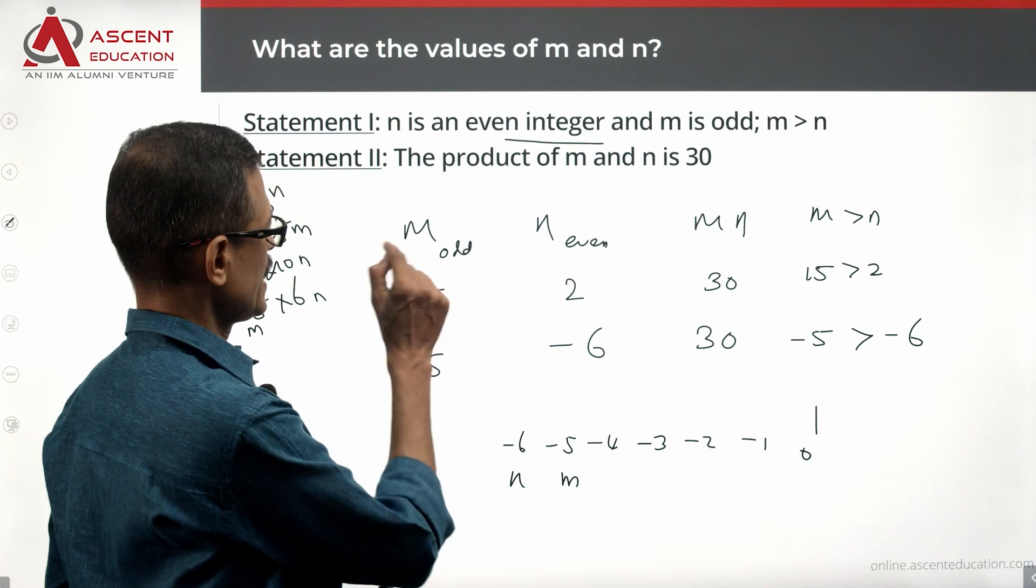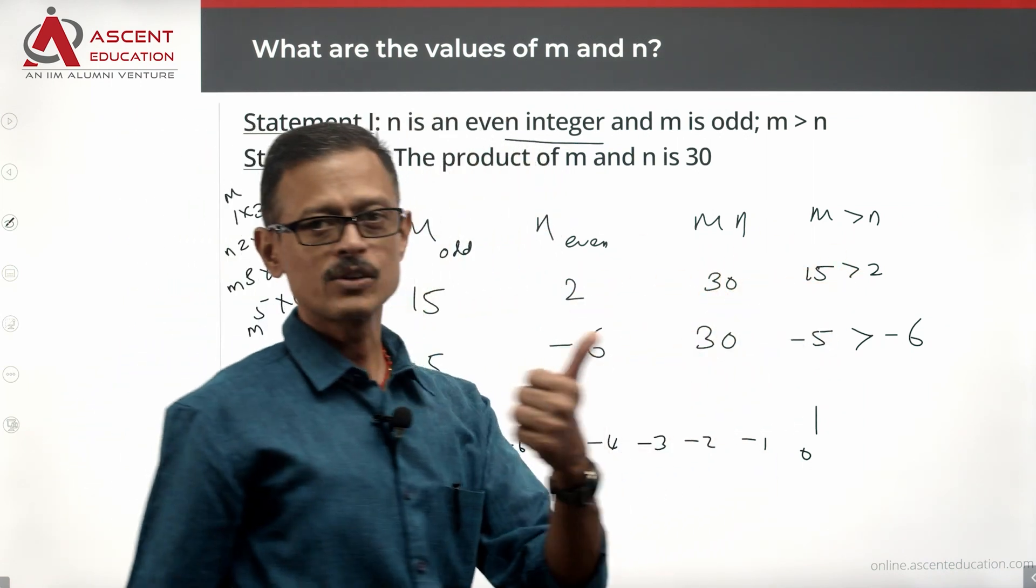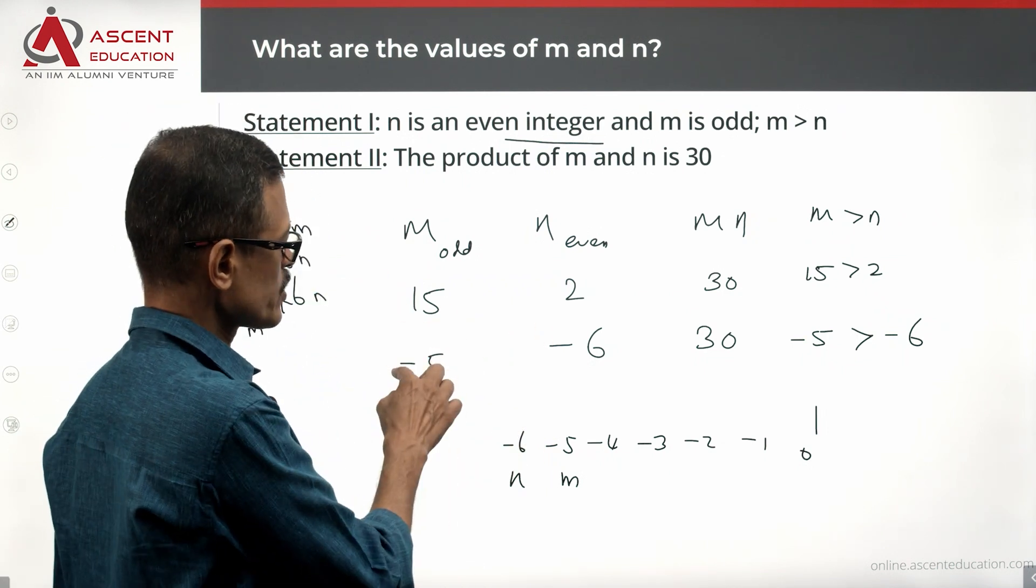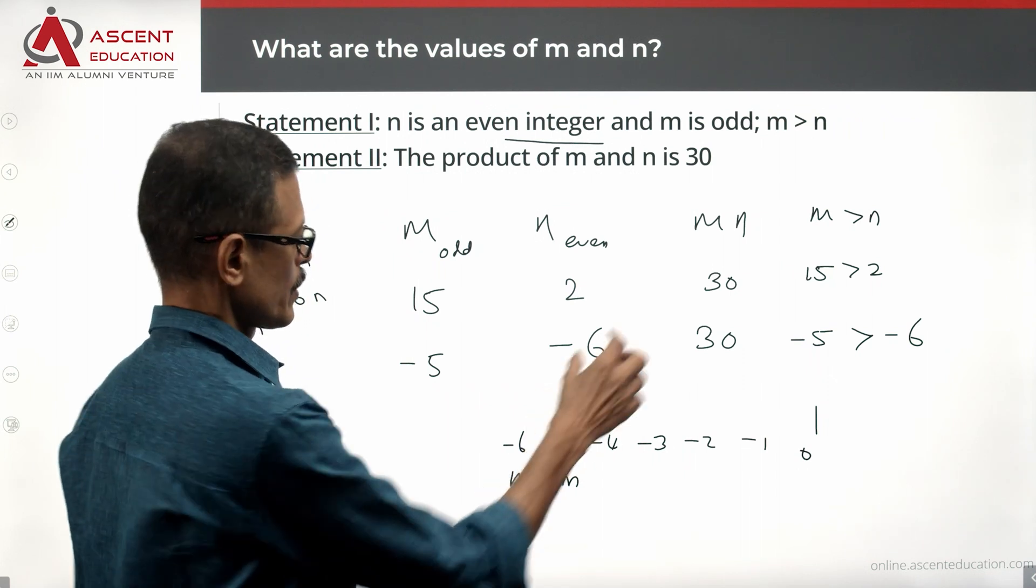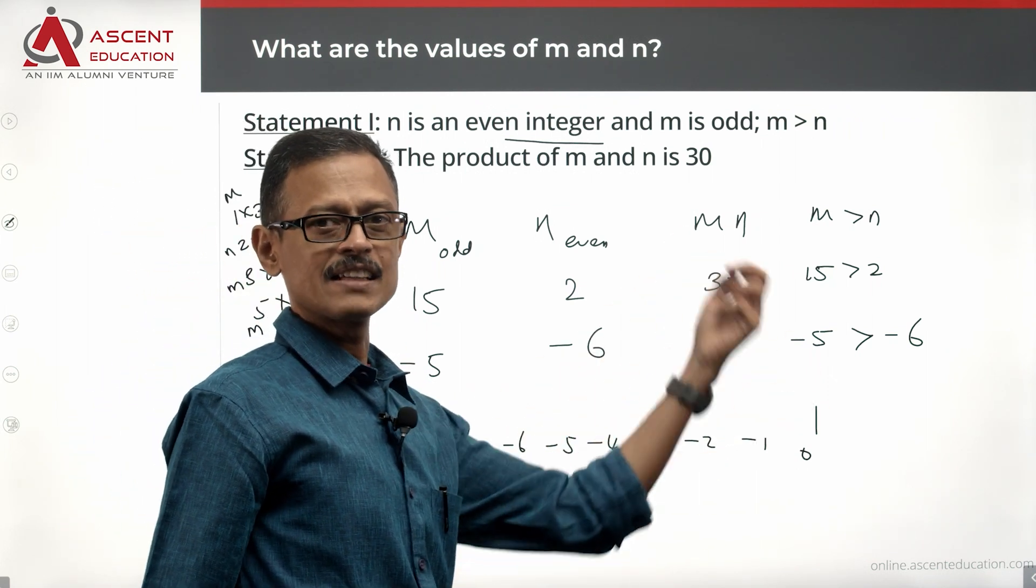What all should it satisfy? M should be odd, N should be even, product 30, M should be greater than N. 15 and 2 satisfy this beautifully, and so does minus 5 and minus 6.